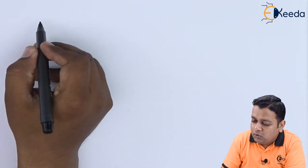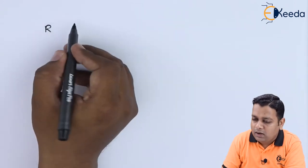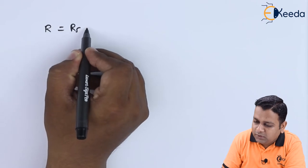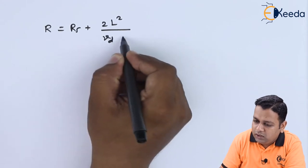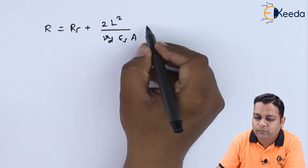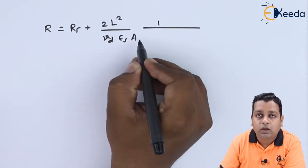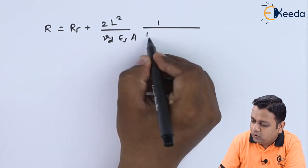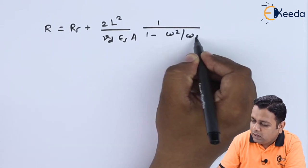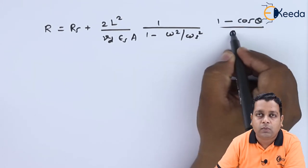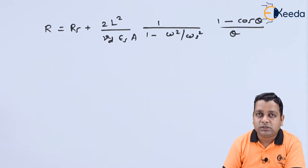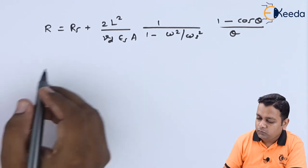The diode terminal impedance can be represented by capital R, expressed as R_s added with the term 2L² divided by (V_d × ε_s × A), multiplied by the ratio of (1 minus ω²/ω_s²) multiplied by (1 minus cosine θ) divided by θ. Several parameters appear on the right-hand side, which we will now define one by one.